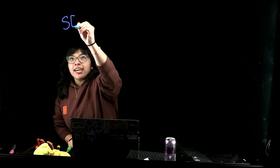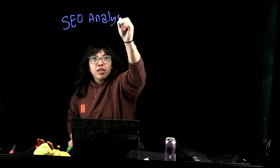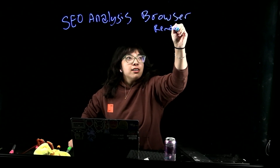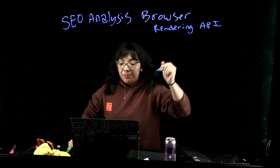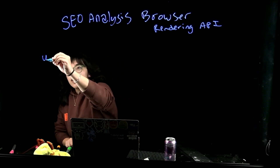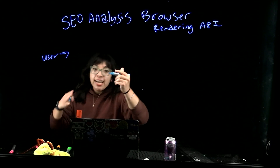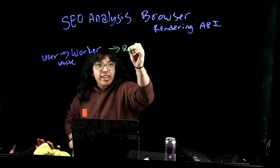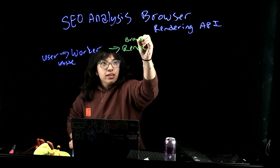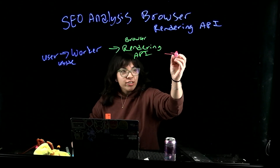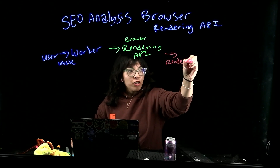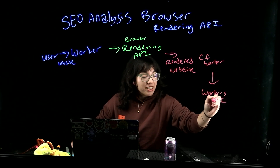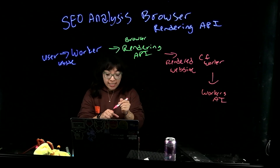Today we're going to be talking about how to analyze SEO using the Cloudflare browser rendering API. First, the user inputs their website — any website — into a worker. Then the worker hits the browser rendering API to render the website. It returns the rendered website back to the worker, and we hit Workers AI to analyze the rendered website and return how you can improve your website.